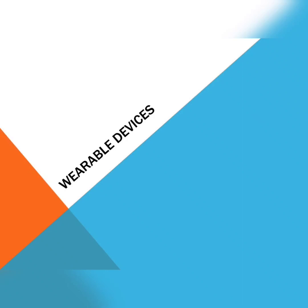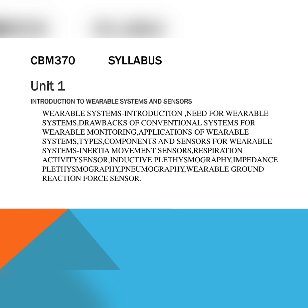We are going to discuss the syllabus of wearable devices. The subject code is CBM 370. Unit 1 covers introduction to wearable systems and sensors, including wearable systems introduction, need for wearable systems, drawbacks of conventional systems for wearable monitoring, applications, types, components, and sensors such as inertial movement sensors, respiratory activity sensors, inductive plethysmography, pneumography, and wearable ground reaction force sensors.